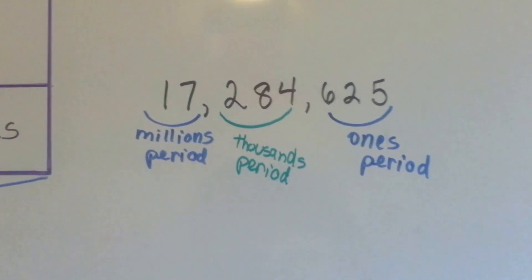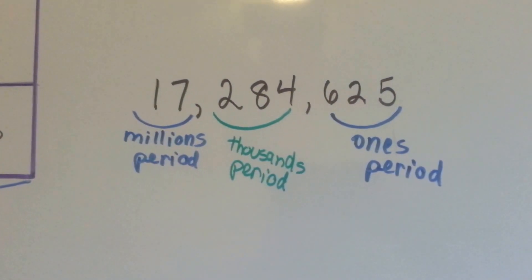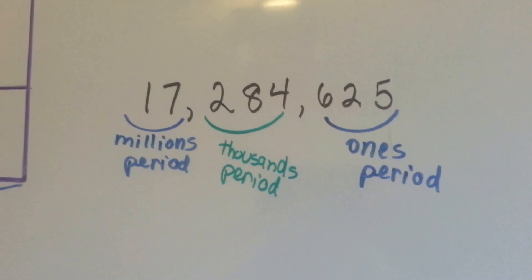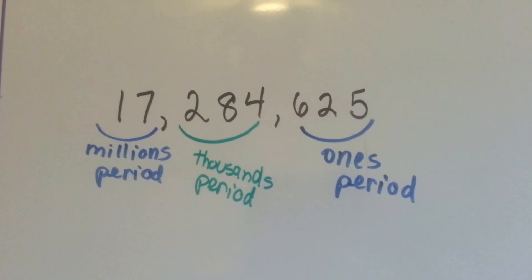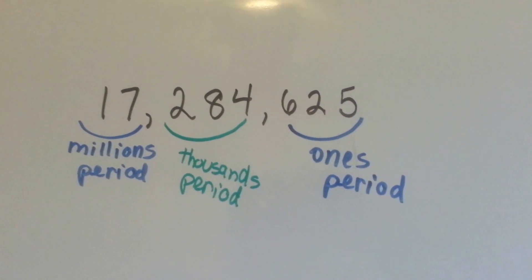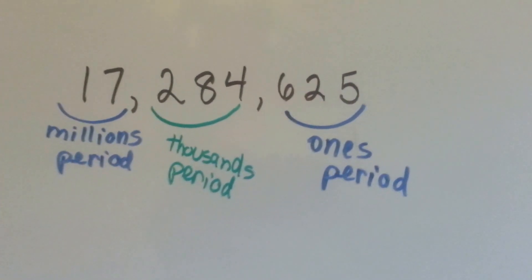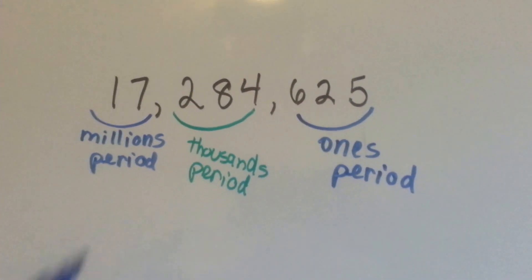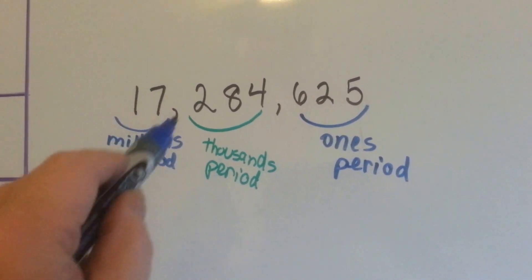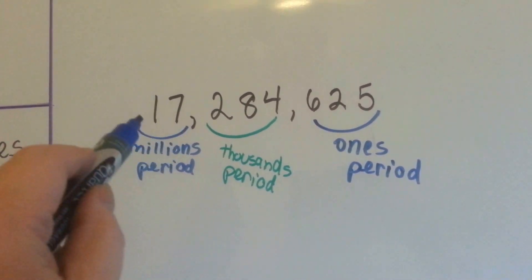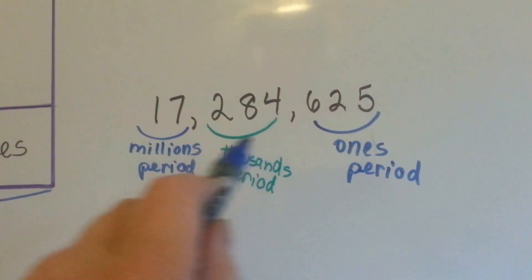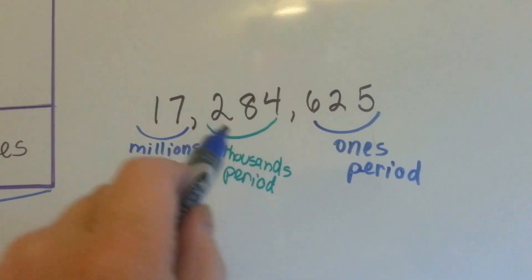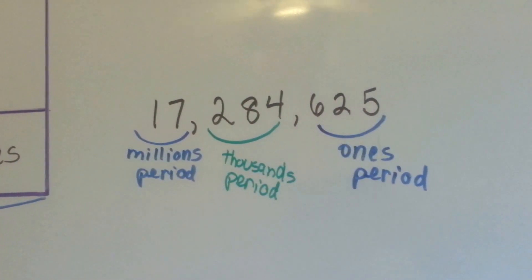In this number, 17,284,625 — you can see the millions period here on the left side of the first comma, then in between the commas is the thousands period, and then here's the ones period.